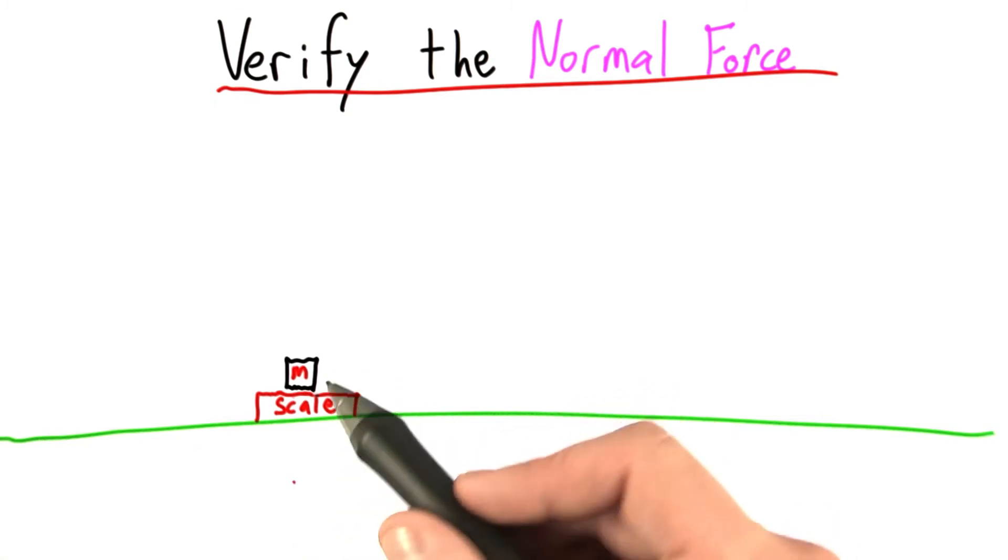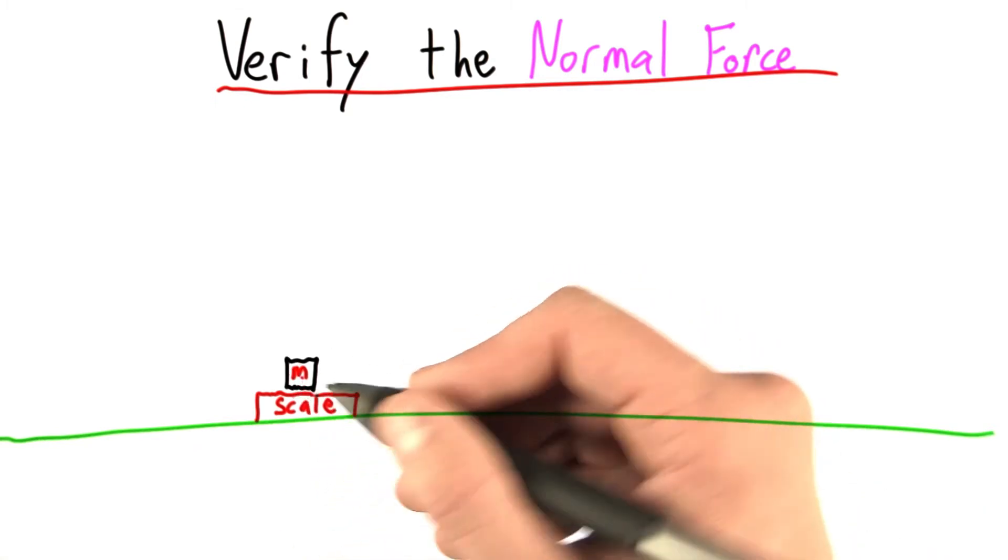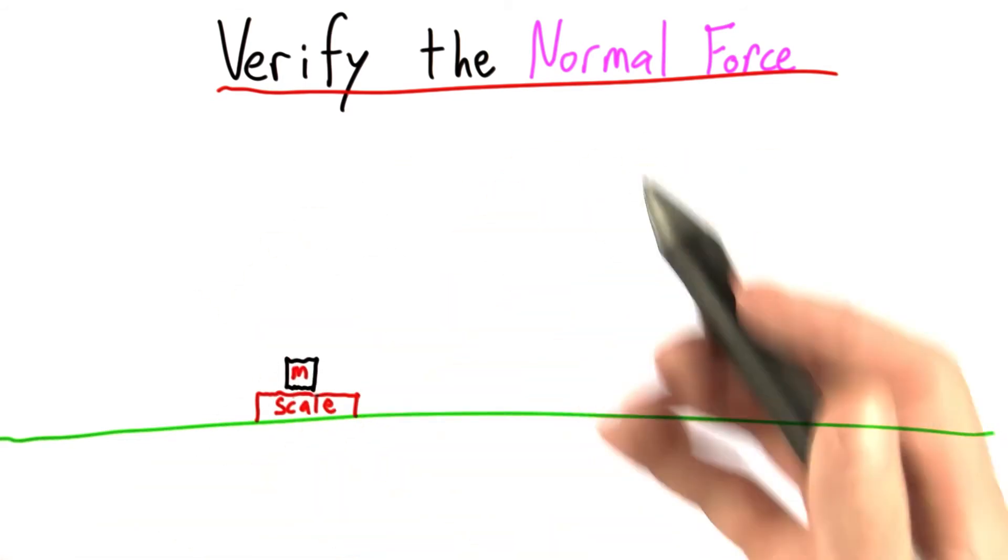Let's simplify a bit. Here you are standing on a scale again, but this time I've drawn you as a box. No offense, I don't think you look like a box, but it's just easier, and we can find that drawing things this way will actually make solving later problems much easier.